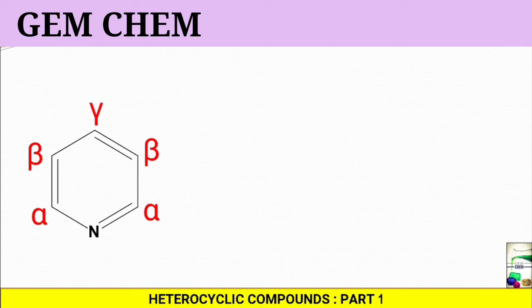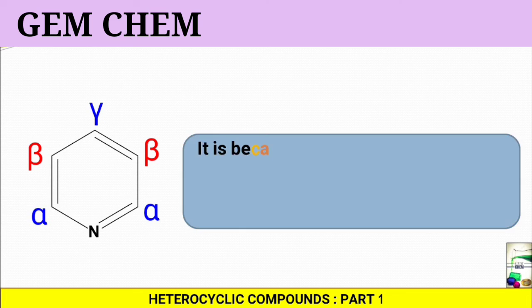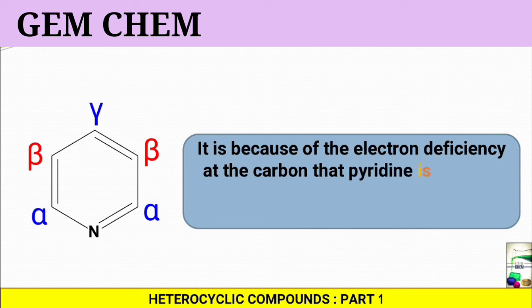As a result of this general electron deficiency at those carbons, pyridine can be referred to as electron poor or sometimes pi deficient.